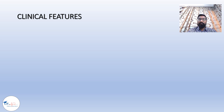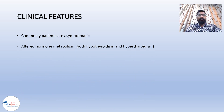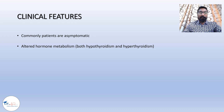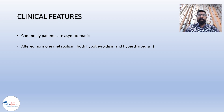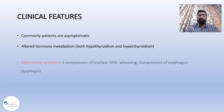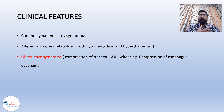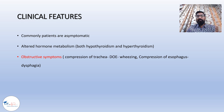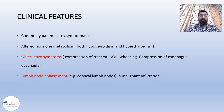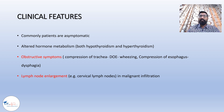Regarding clinical features: patients are usually asymptomatic but present with altered hormone metabolism. Goiter can present in both hypothyroid and hyperthyroid patients. Obstructive symptoms also occur — enlargement of the thyroid can compress the trachea, leading to dyspnea on exertion. Patients may also present with dysphagia, or difficulty in swallowing.